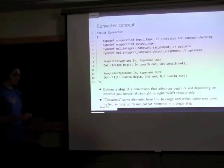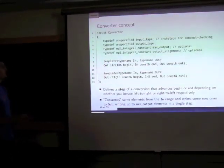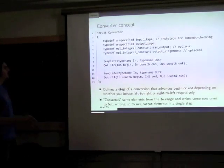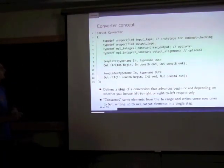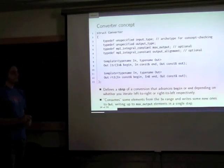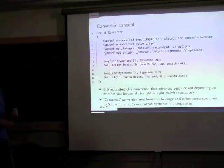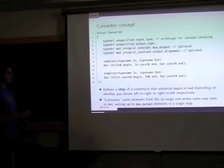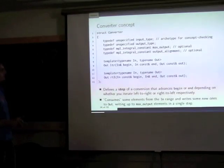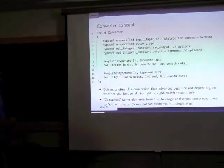What we're going to do is apply a conversion step-by-step with an iterator adapter. It works for bidirectional ranges: 'in' and 'out' are iterators — a bidirectional input iterator and an output iterator. Left-to-right or right-to-left will consume some of the input range (defined by begin and end) and write some output to 'out'. The input type is used only for concept checking. Max output specifies how many elements you're going to write, and alignment specifies what the output buffer should be aligned to (for SIMD).